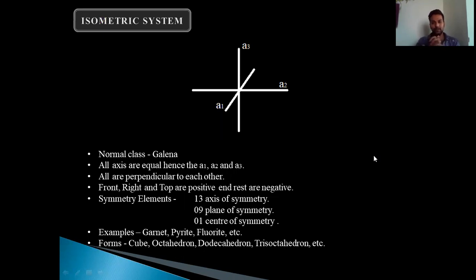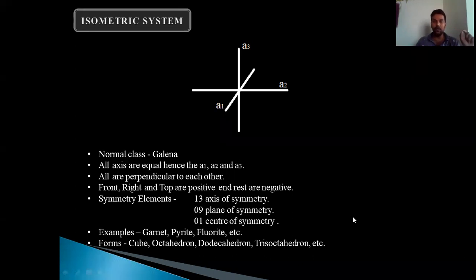The isometric system consists of three axes. These three axes are equal in length and hence their names are A1, A2, and A3. If they would have been different in length, their names would be different like A, B, C. But all axes are equal in length and hence referred as A1, A2, and A3. All axes are perpendicular to each other — A1 is perpendicular to A2, A2 is perpendicular to A3, and A3 is perpendicular to both A1 and A2. So there is a pronounced perpendicularity among these axes.